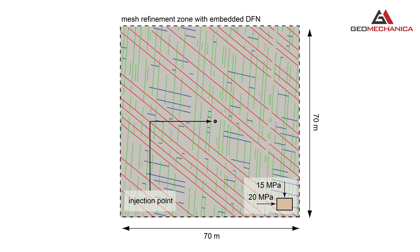Furthermore, to account for the presence of naturally existing fractures in the rock mass, a network of discrete fractures is embedded within the zone of refinement.